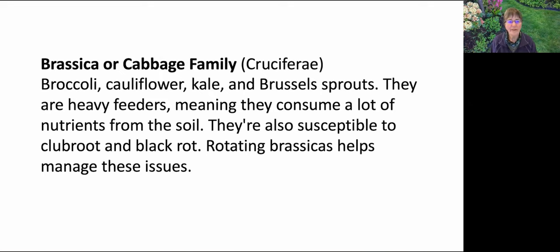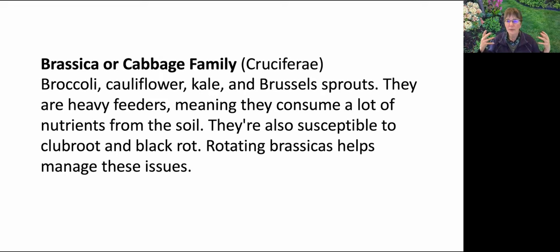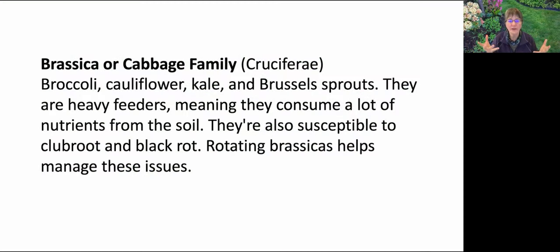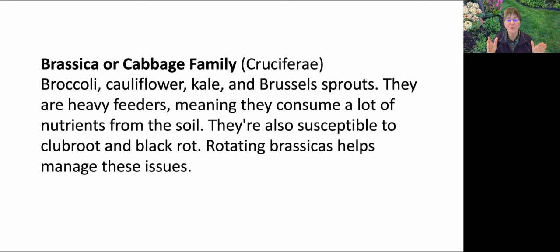Then we have brassica, or the cabbage family. Brassicas are an important family to many gardeners: broccoli, cauliflower, kale, Brussels sprouts. They are heavy feeders — they consume and draw up a lot of nutrients from the soil. They're also susceptible to club root and black rot. Rotating the cabbage family helps manage these issues.